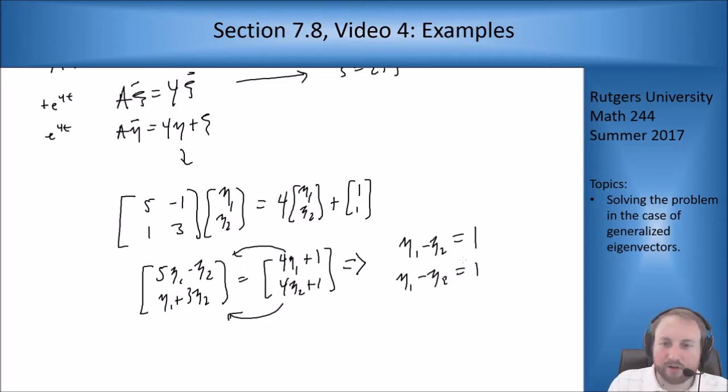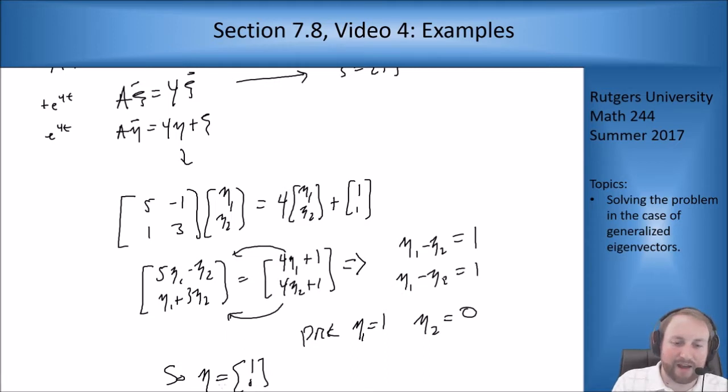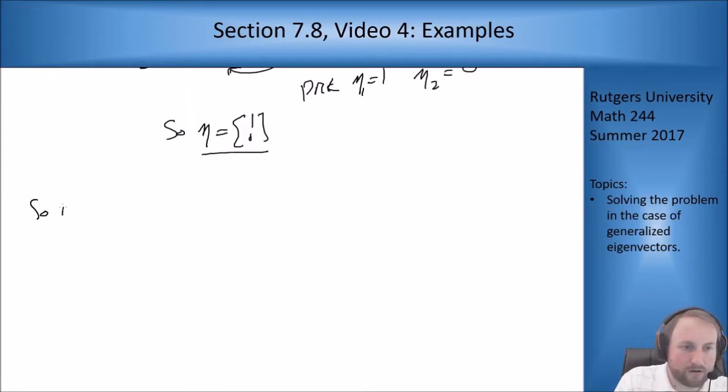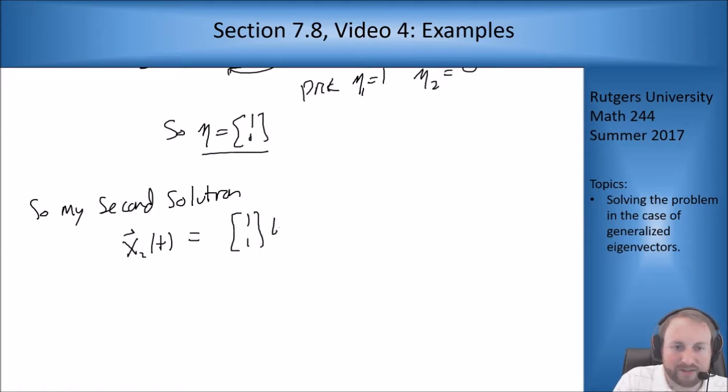I can pick whatever I want. I'll pick η₁ = 1, η₂ = 0. So I'm taking η to be the vector [1,0]. If I plug that and my ξ into my general solution, I get my second solution: x₂(t) = [1,1]te^(4t) + [1,0]e^(4t).